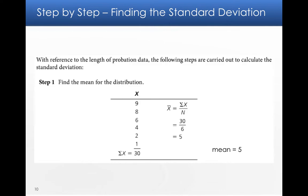So let's look at how we find the standard deviation. Imagine we've got some data here about how long someone's been on probation. First, we need to find the mean of our distribution. We need to find X bar. So we're going to add up all those scores, which equals 30, divided by 6, because 6 is the number of scores in the distribution. So our mean, X bar, equals 5.